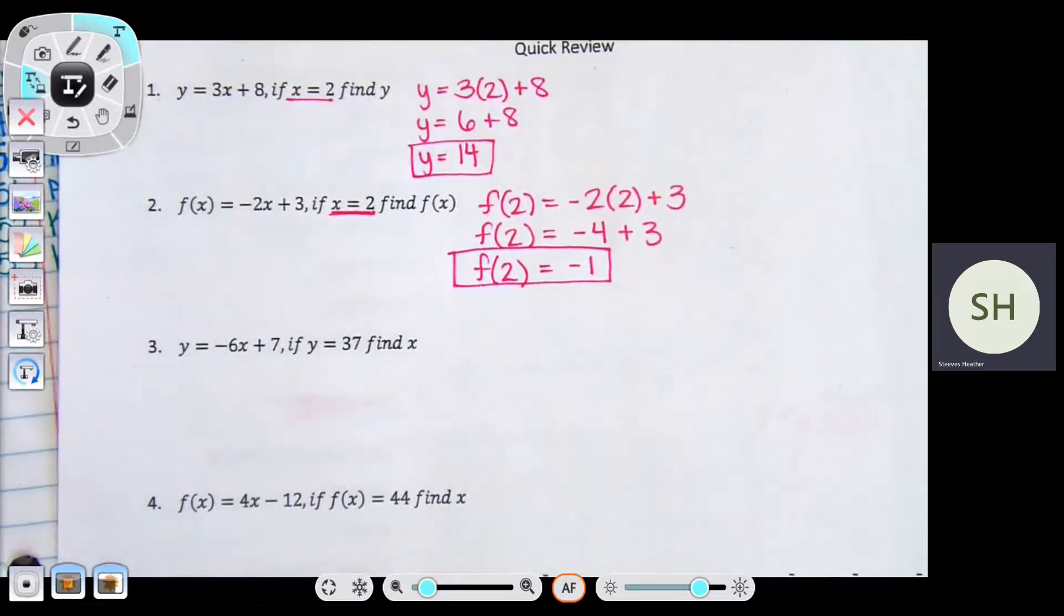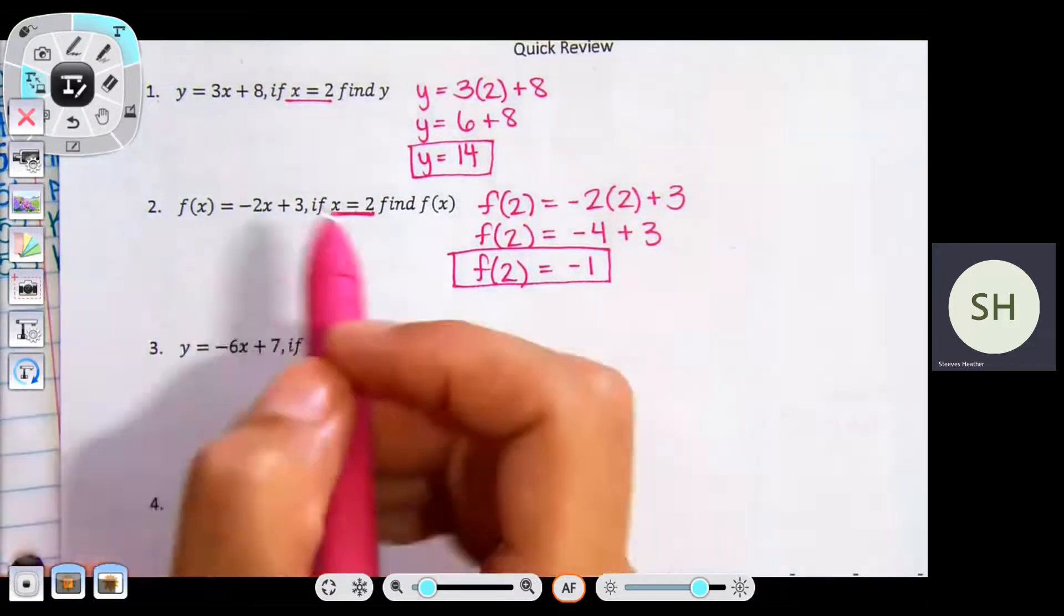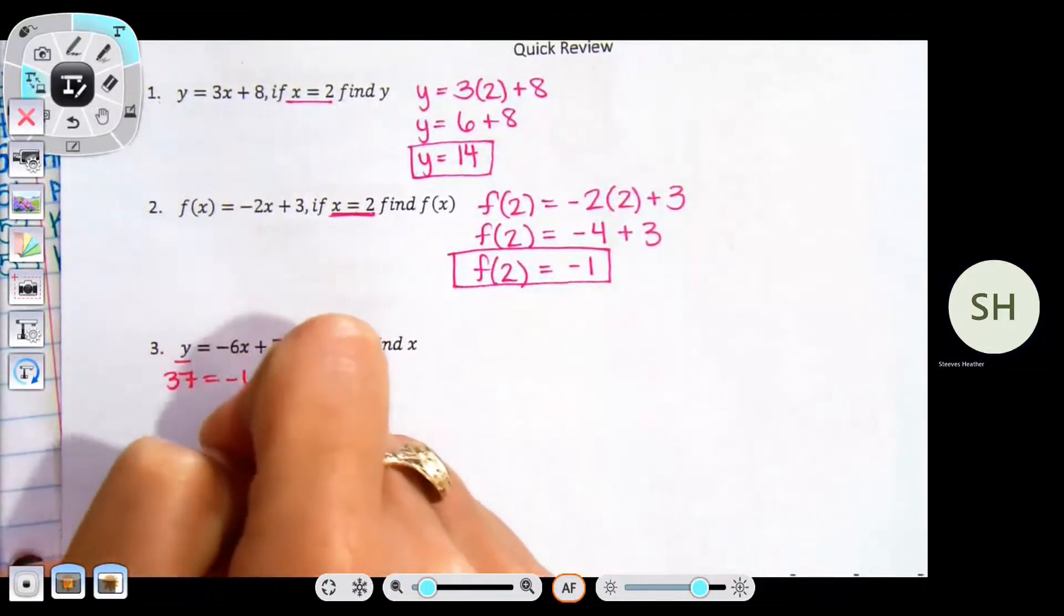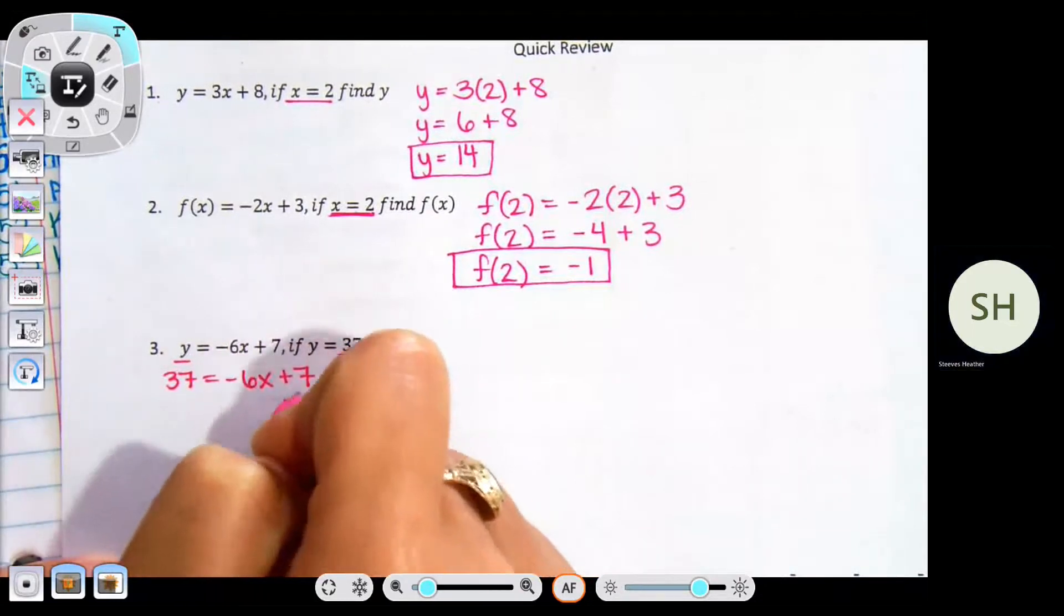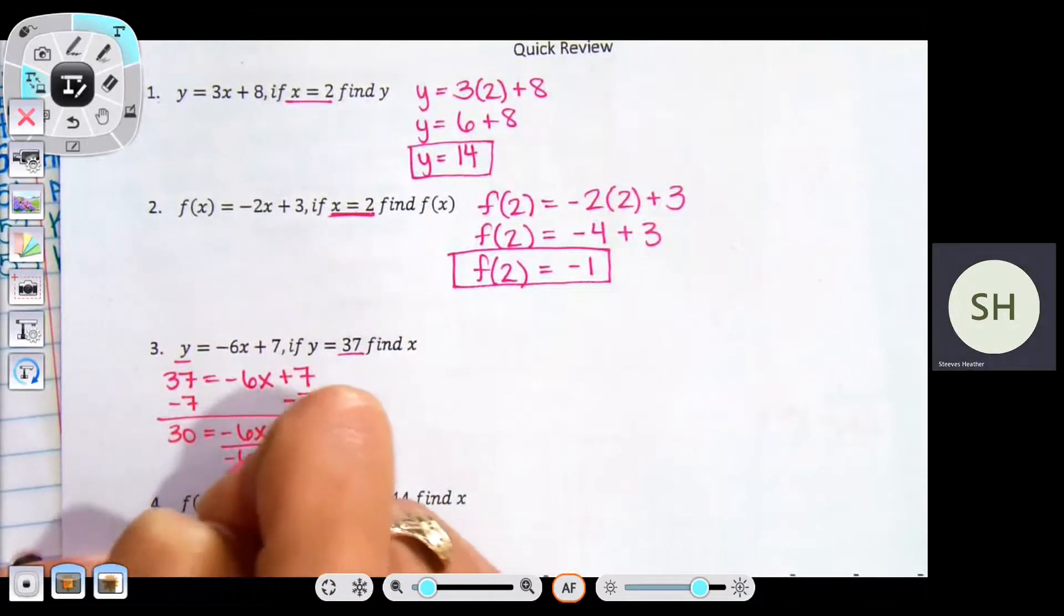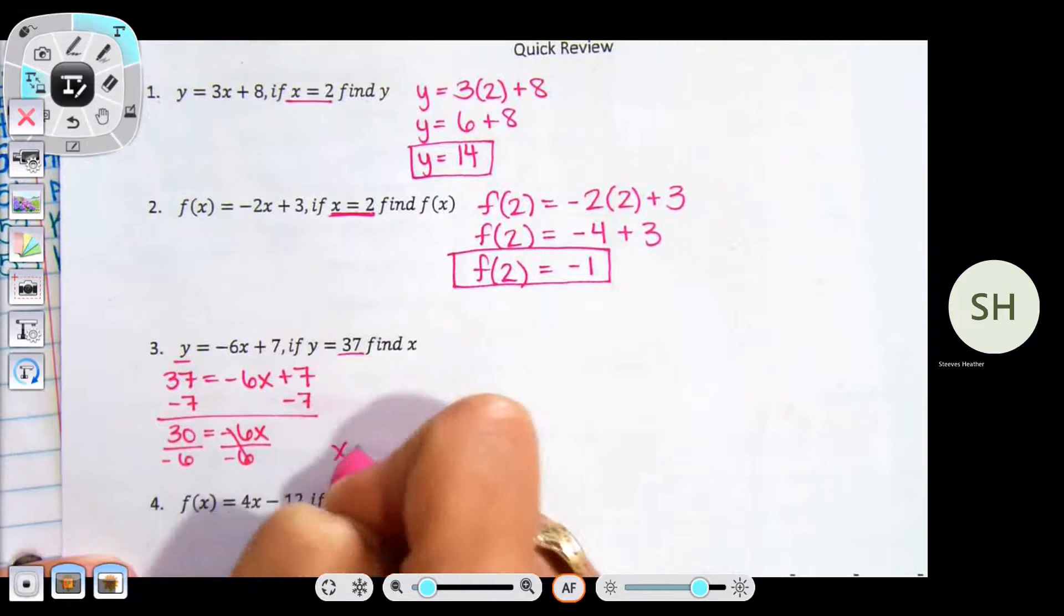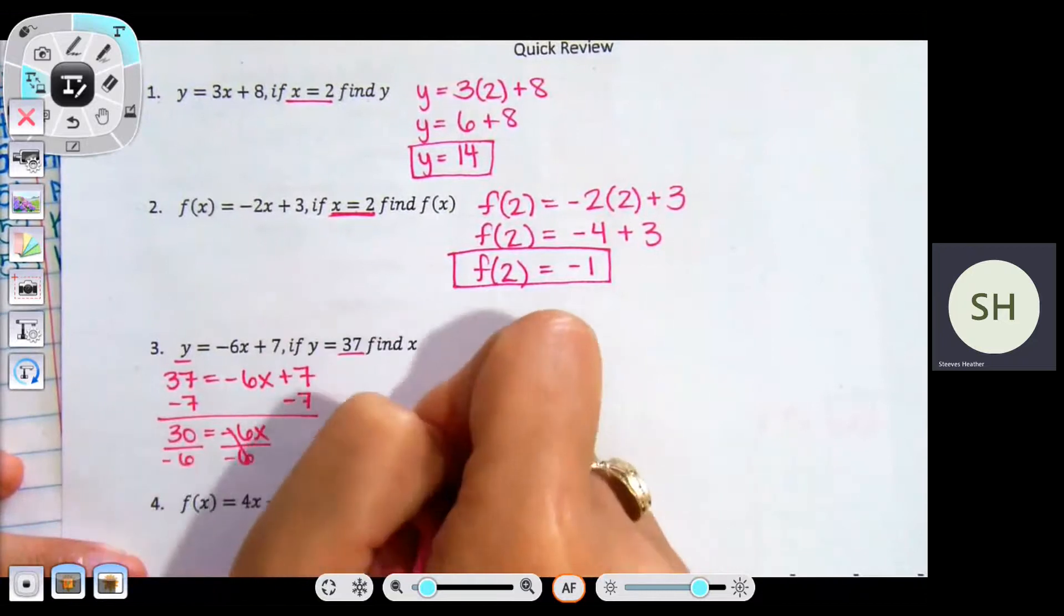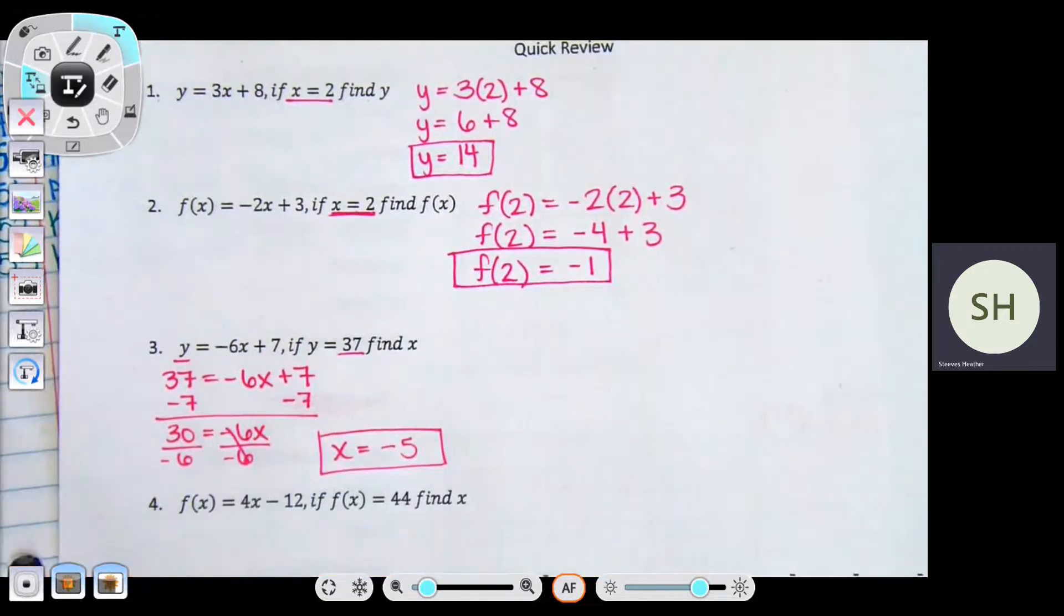So number three, I want you to take a minute. It tells you what y is and this time you're finding x. So you're using basically opposite operations to work backwards. So take a minute. If you did three, go to four, then wait a second. So for number three, what do you end up getting? Negative 5.